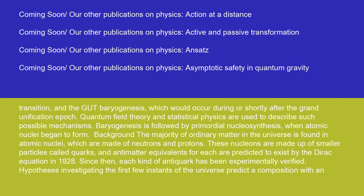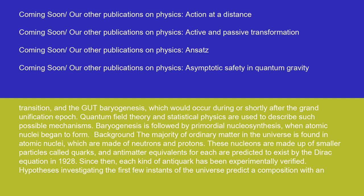Baryogenesis is followed by primordial nucleosynthesis when atomic nuclei began to form. The majority of ordinary matter in the universe is found in atomic nuclei, which are made of neutrons and protons. These nucleons are made up of smaller particles called quarks, and antimatter equivalents for each are predicted to exist by the Dirac equation in 1928. Since then, each kind of antiquark has been experimentally verified. Hypotheses investigating the first few instances of the universe predict an almost equal number of quarks and antiquarks. Free and separate individual quarks and antiquarks have never been observed in experiments.